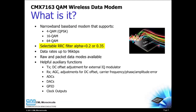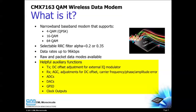The roll-off of the root-raised cosine filter is selectable between 0.2 and 0.35. The CMX7163 can support data rates up to 96 kilobits per second. Both raw and packet data modes are supported.